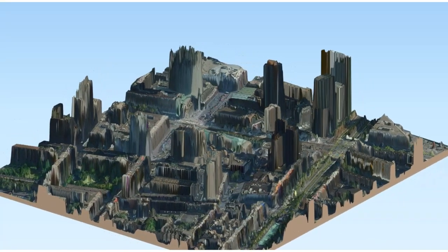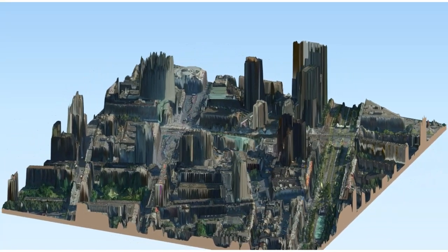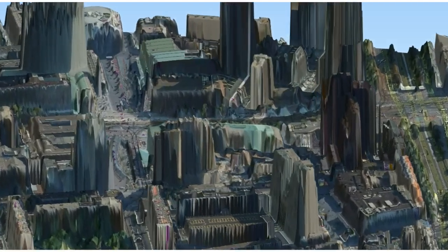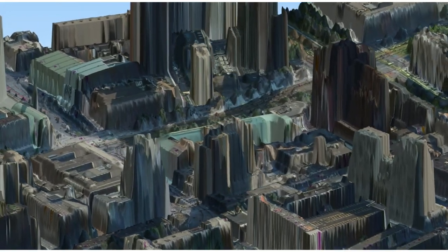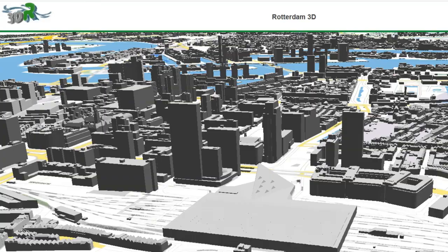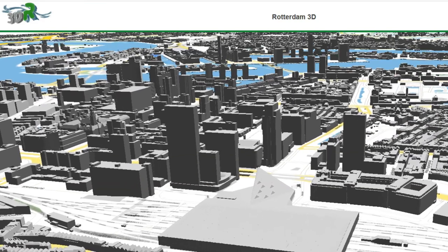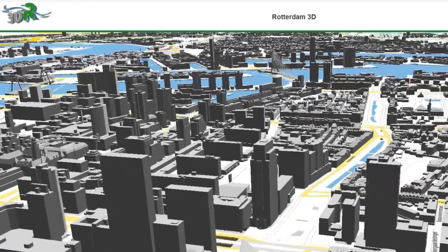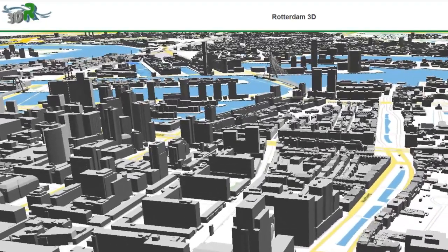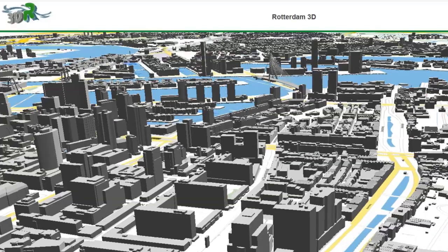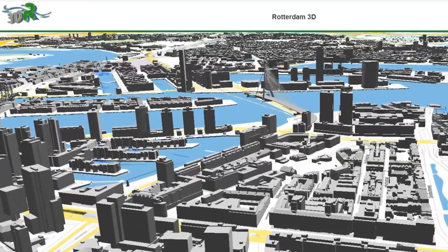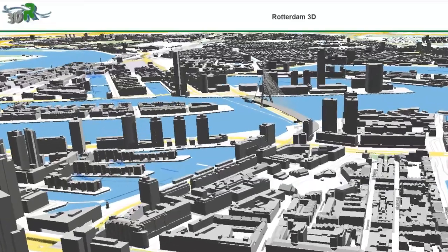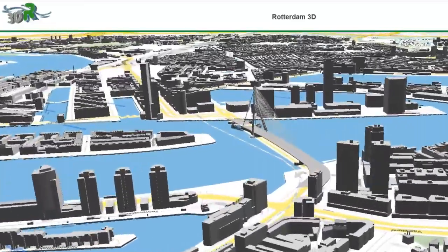Here we see a digital surface model of the city center of Rotterdam, where we used a 50 cm elevation model with aerial photographs draped over it. We can also generate a digital surface model based on vector data. In that case, the building shapes are much clearer than when we use raster, but we don't have information on the texture of the buildings. This is data from Rotterdam based on CityGML data that can freely be downloaded from the internet.